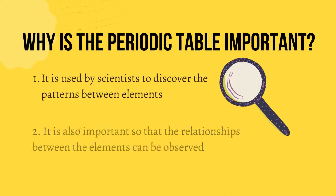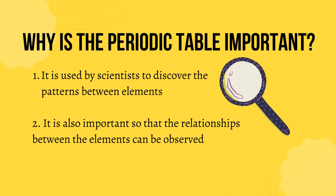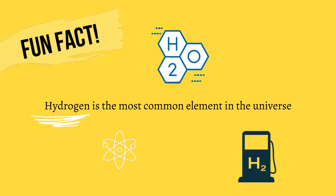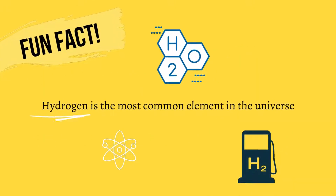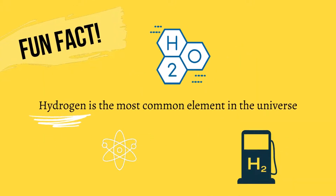Why is the periodic table important? First, it is used by scientists to discover the patterns between elements. Second, it is also important so that the relationships between the elements can be observed. Here is a fun fact: hydrogen is the most common element in the universe.